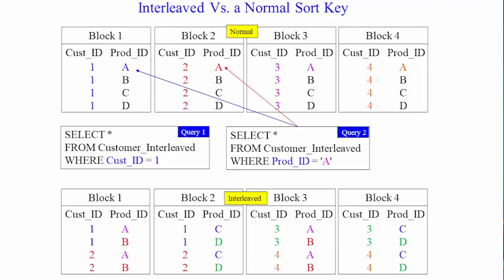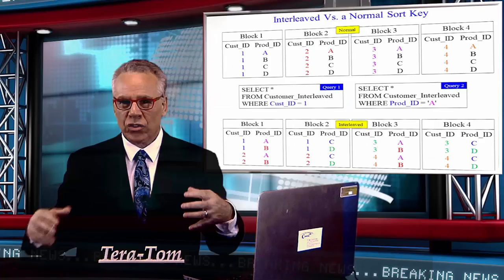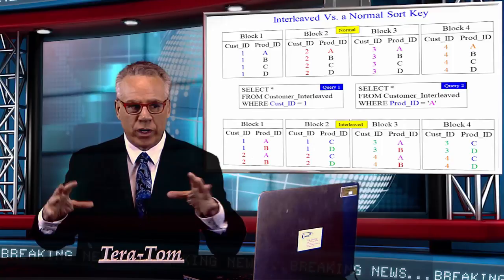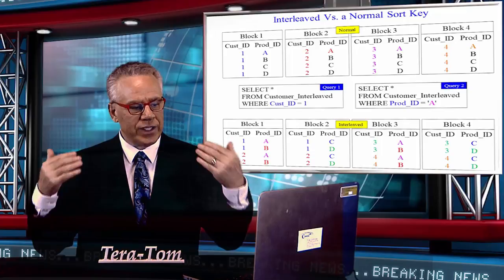So, because we have a mixture of these type of queries coming a lot, maybe 50% are like query one, and 50% of the queries all day are like query two. The interleaved may be a better approach, because when we say select everything from customer interleaved, where cust ID equals one, it's going to read a few more blocks. It's going to read two blocks to satisfy that versus one.